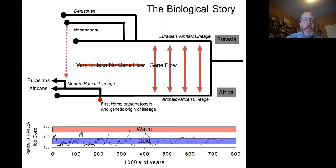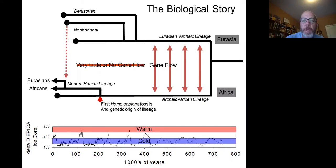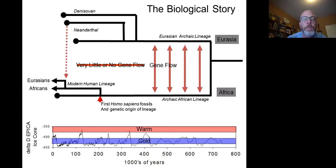When that founder population leaves Africa, they encounter Neanderthals, and there are a couple of interbreeding events — hybridization events. The founder population picks up some Neanderthal DNA such that all Eurasians have some Neanderthal DNA, varying between roughly 4% and 7%.